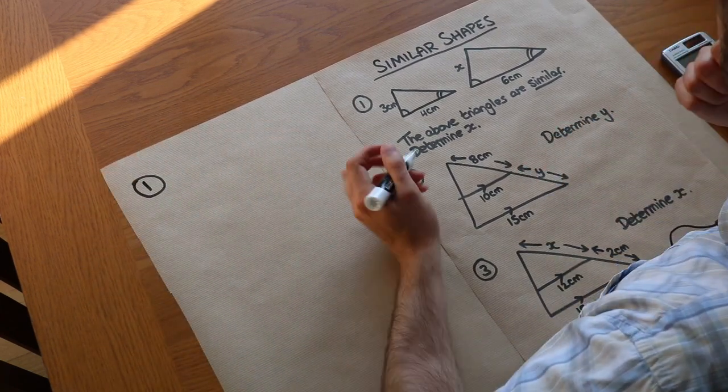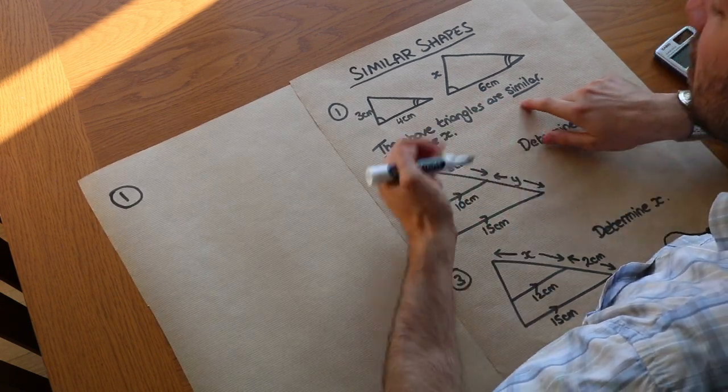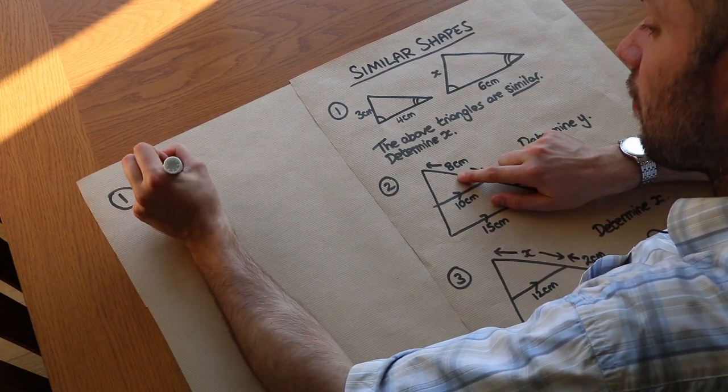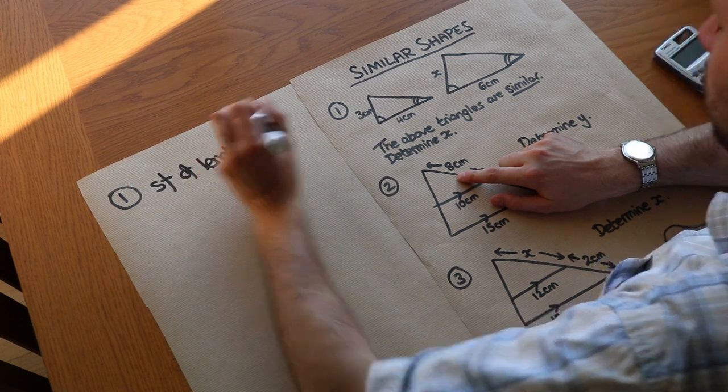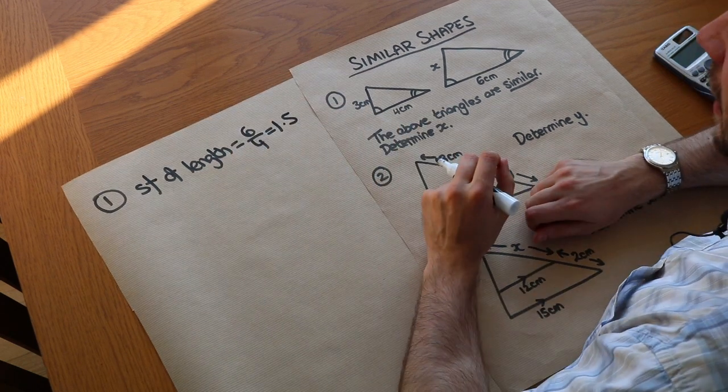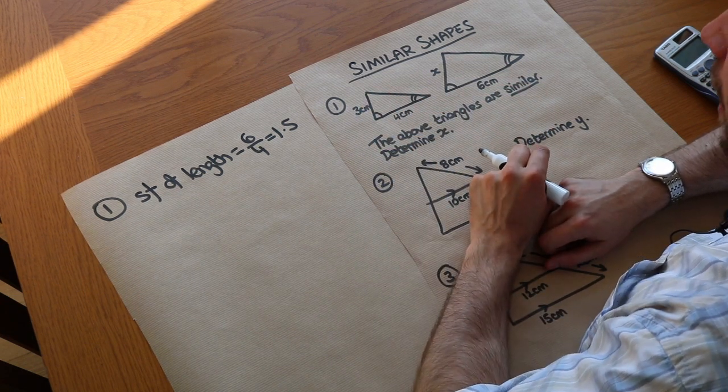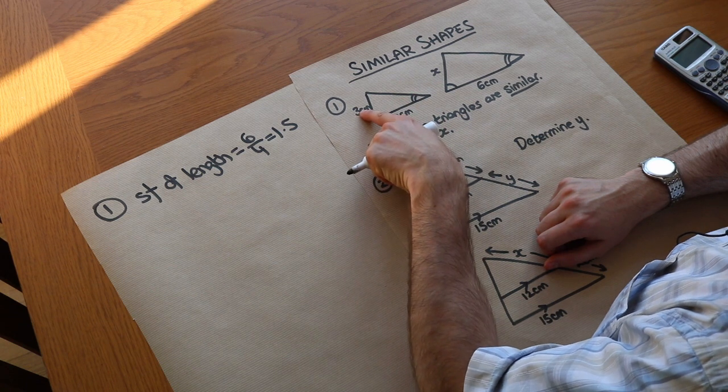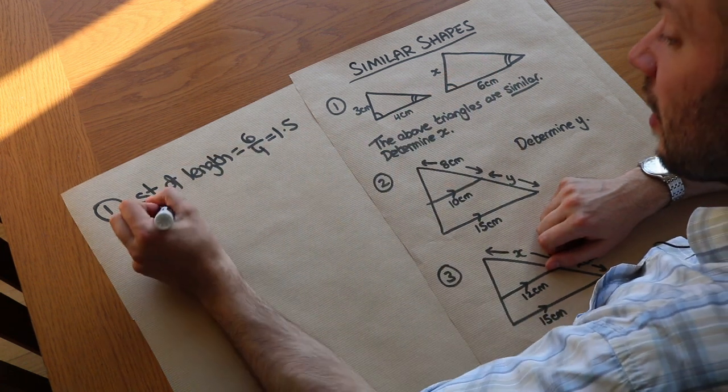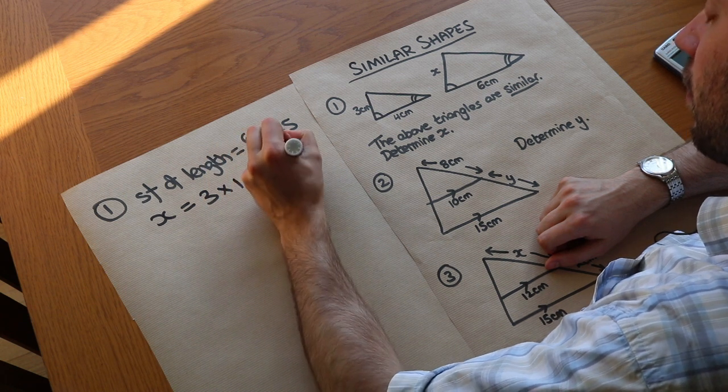With question one, there are two different ways to do it. One way is to identify what the scale factor is. How many times bigger are the lengths here than the lengths here? The scale factor of length equals 6 divided by 4, which gives us 1.5. This tells us all the lengths in this triangle are 1.5 times bigger than this triangle. That allows us to find x because we can do 3 times 1.5, which gives us x. So x must be 3 times 1.5, which is 4.5 centimeters.